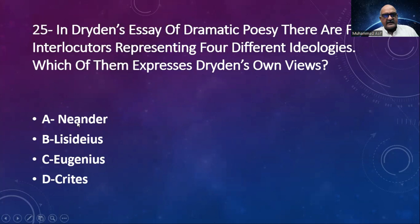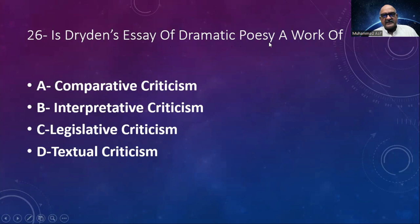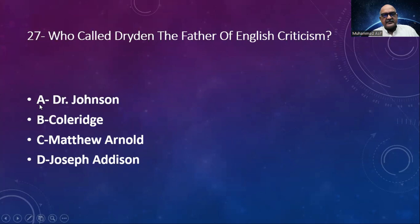Number 26: Is Dryden's Essay of Dramatic Poesy a work of comparative criticism, interpretative criticism, legislative criticism, or textual criticism? The answer is comparative criticism. Number 27: Who called Dryden the father of English criticism? Options: Dr. Johnson, Calvary, Matthew Arnold, Joseph Anderson. The correct answer is Dr. Johnson. You should also focus on this — that Dryden is called the father of English criticism.